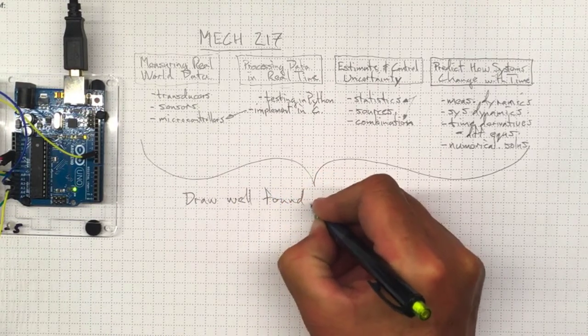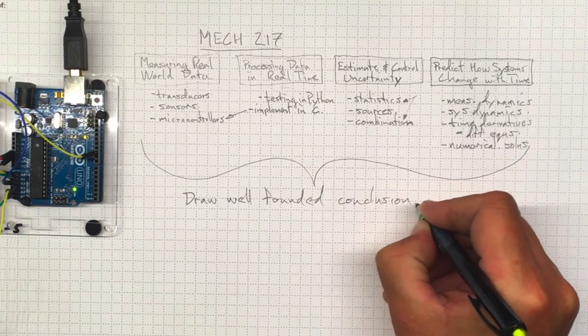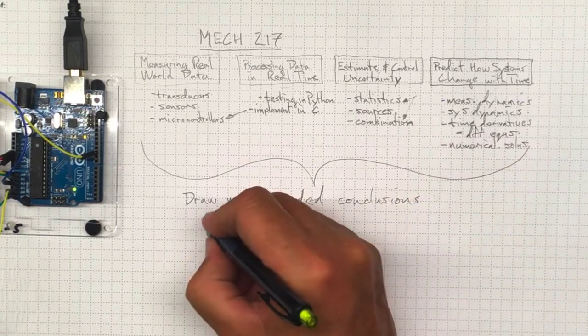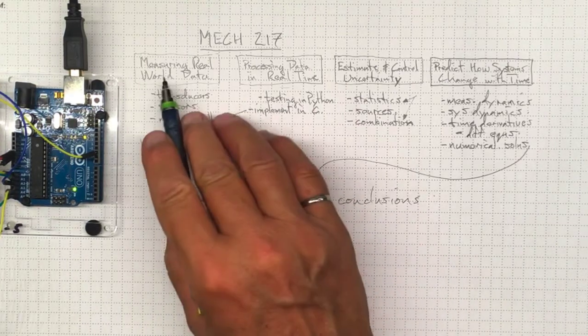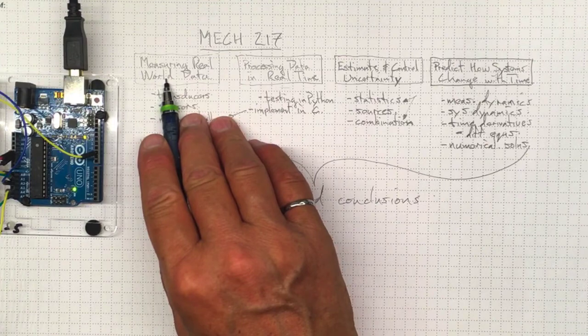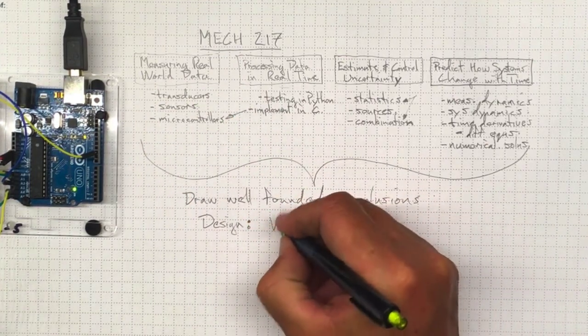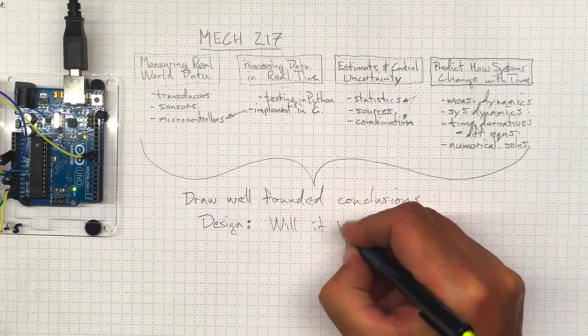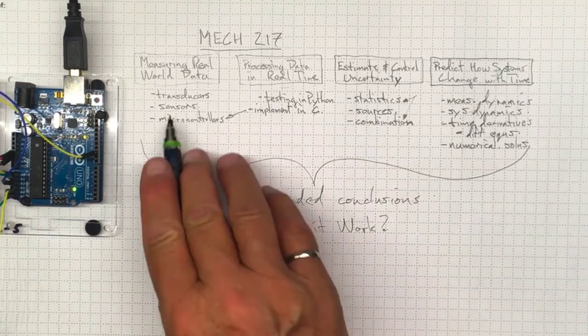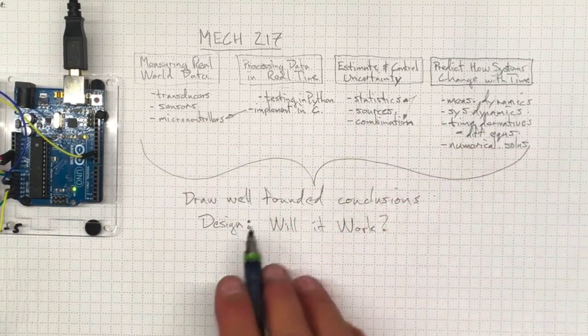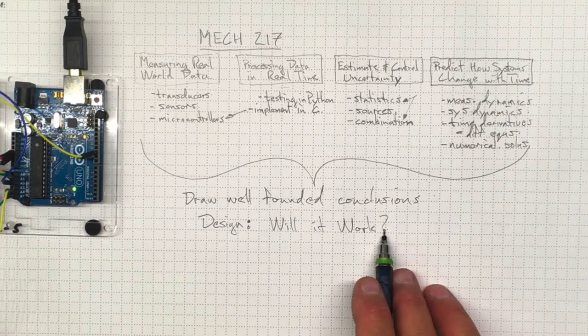And those well-founded conclusions are what are going to tell us whether or not our product will work. Because ultimately, it's all about design. We're going to design and build real products in the real world. And our major design question, will it work? And ultimately, once we've done all of these tasks, we should be able to make a reasonable assessment on whether or not it will work.